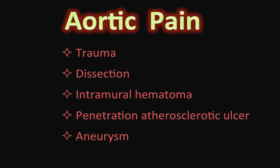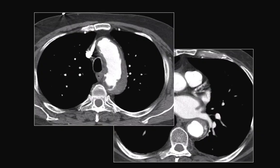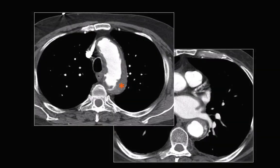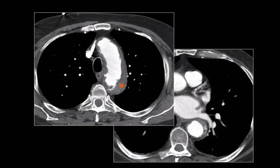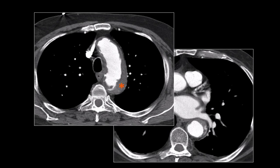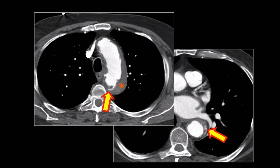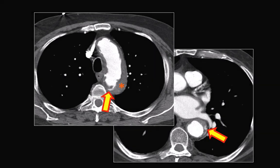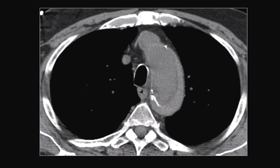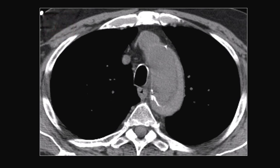Fusiform or saccular aortic aneurysms may be complicated by dissection or rupture, and could be a serious cause of morbidity and mortality. Let's look at our case again. You've probably noticed that the patient has a thick hypodense peripheral rim. This rim shows an internal area of linear and irregular contrast density. Here's an additional image to look at and think about.